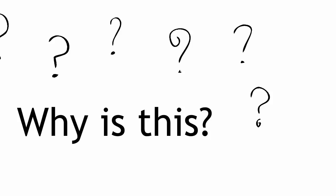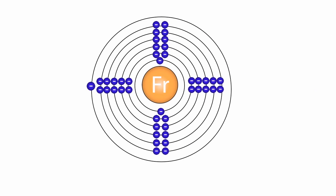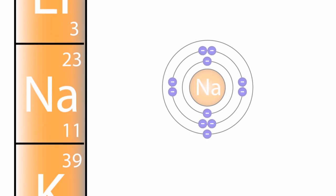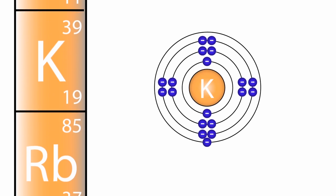Why is this? Two reasons. Firstly, the outer electron they have is easily lost. Secondly, as the atom gets bigger they find it increasingly easy to lose the electron.